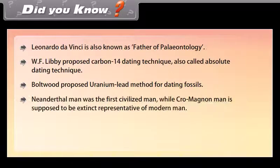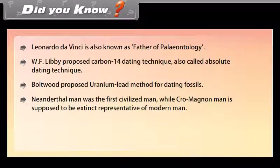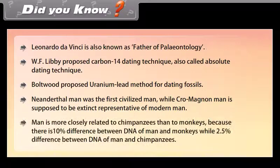Neanderthal man was the first civilized man, while Cro-Magnon man is supposed to be an extinct representative of modern man. Man is more closely related to chimpanzees than to monkeys because there is 10% difference between DNA of man and monkeys, while 2.5% difference between DNA of man and chimpanzees.